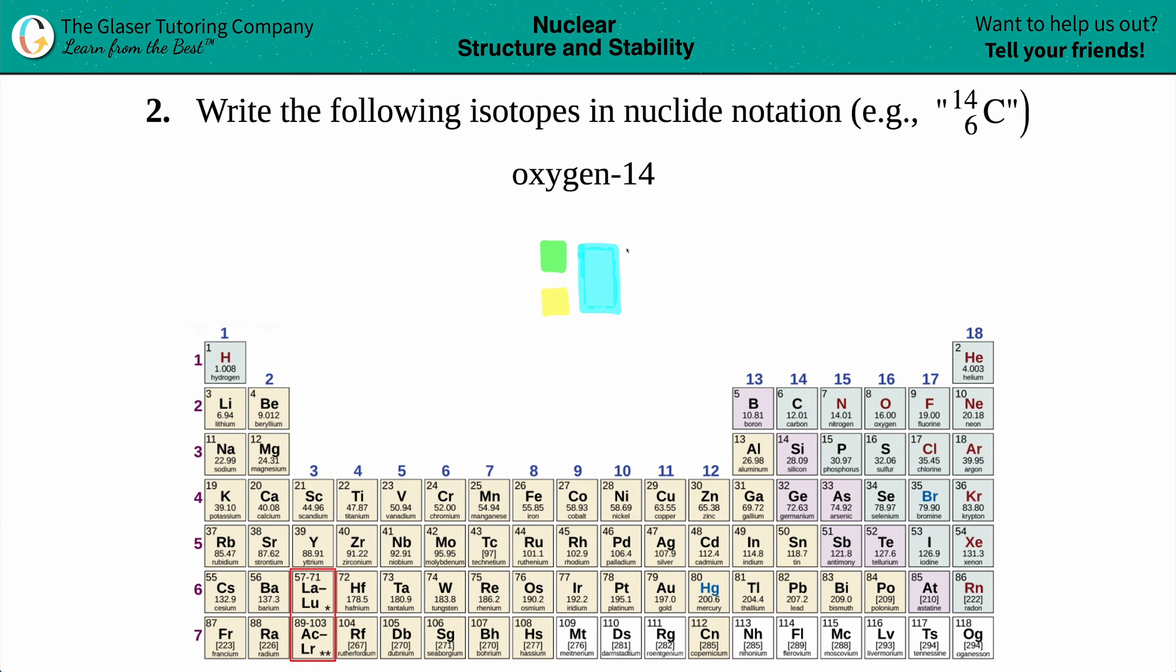The easiest part to do first is to find out what the element is. In this case, they tell us we have oxygen. What is the elemental symbol for oxygen? If you don't know offhand, you could always go to the periodic table and find oxygen right over here. It's just big O, so we get O for the element.